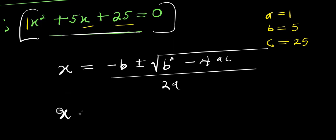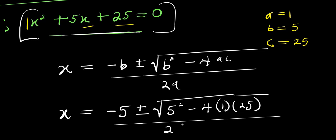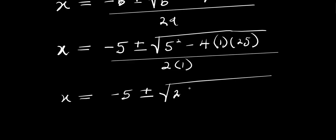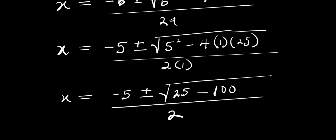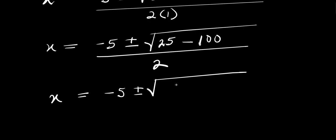So from here we have x equals negative five plus or minus the square root of five squared minus four times one times twenty five, divided by two. That gives us the square root of twenty five minus one hundred, which is the square root of negative seventy five, divided by two.